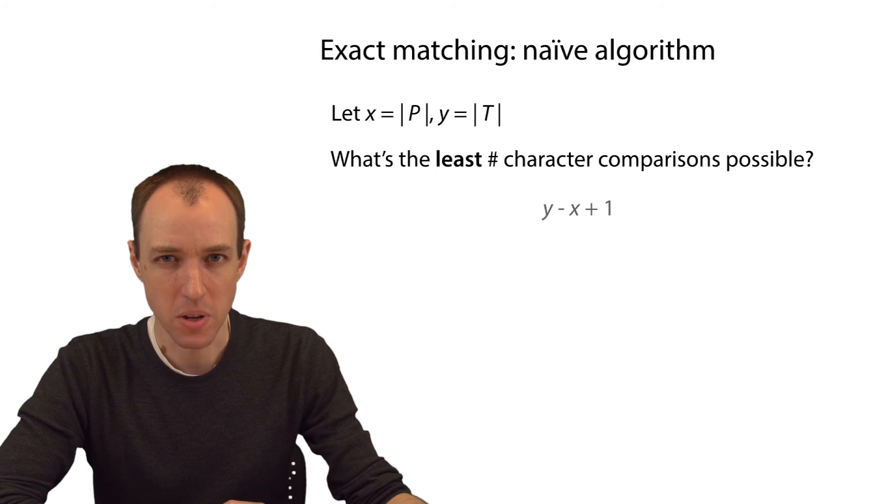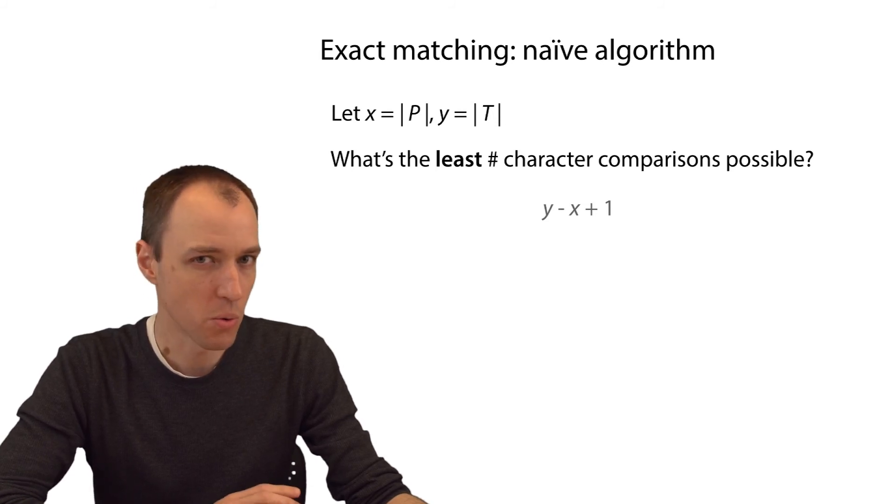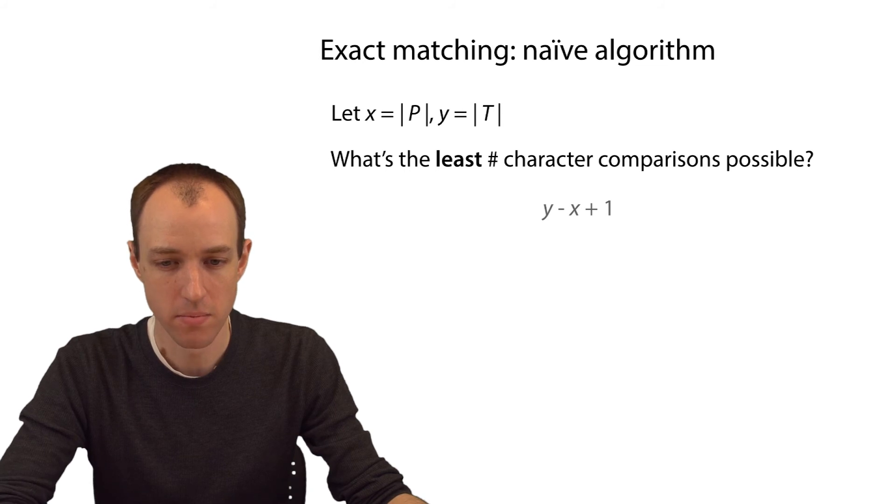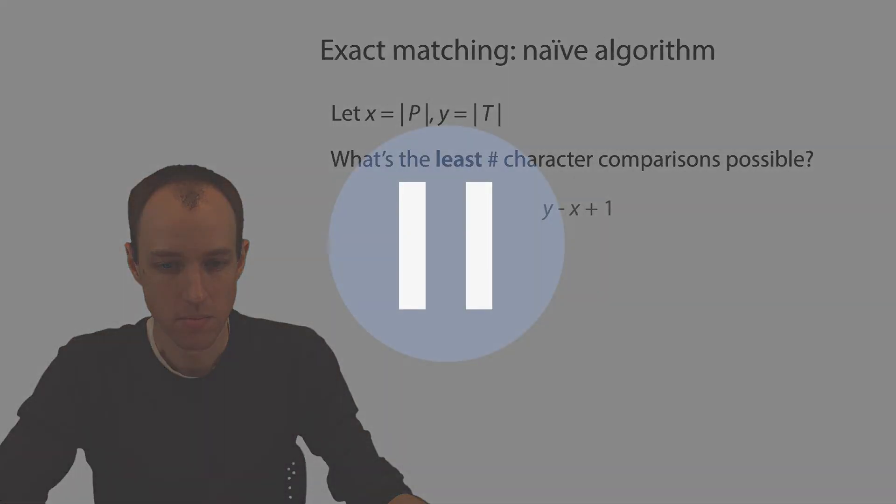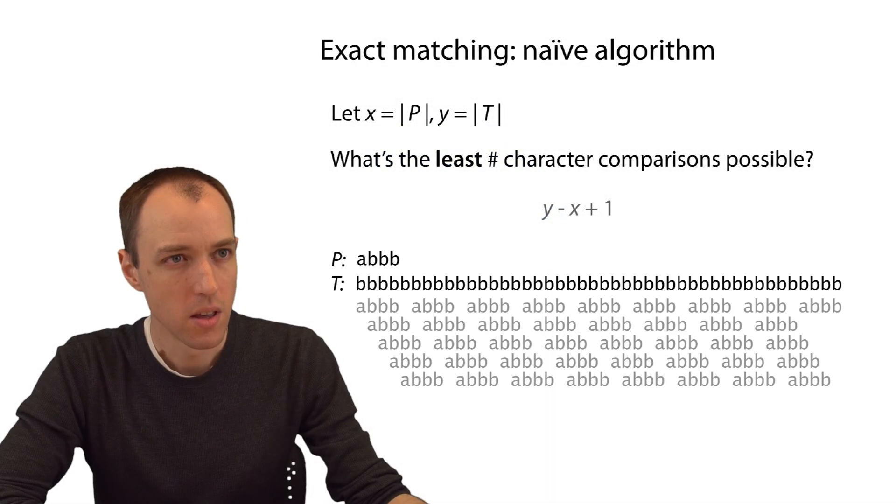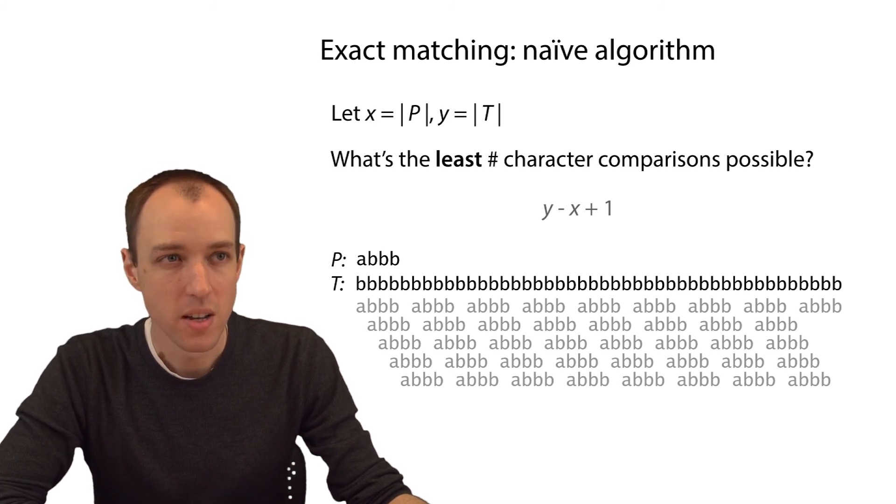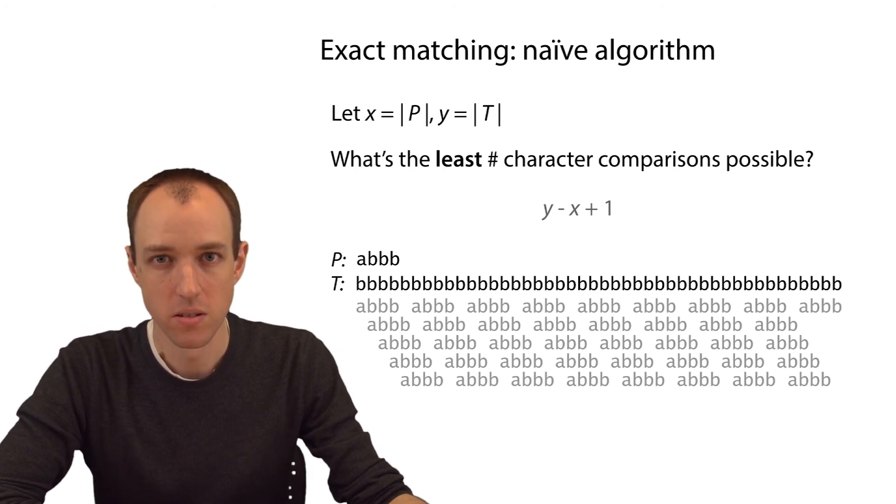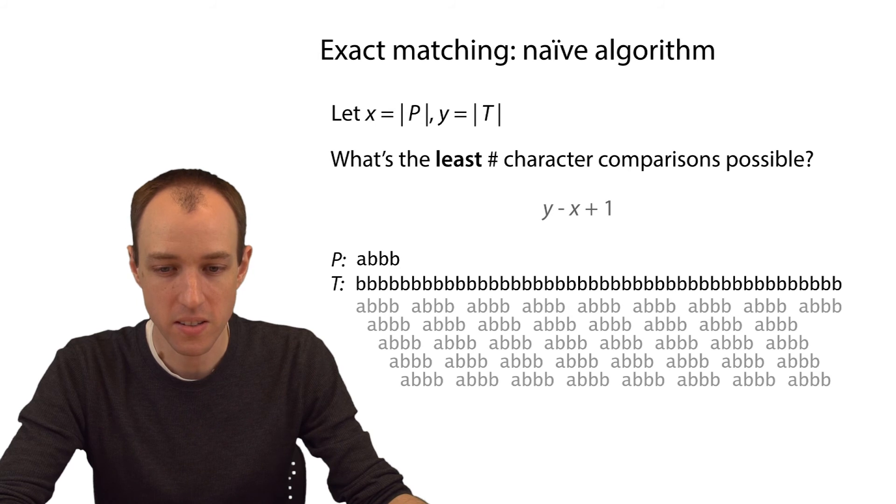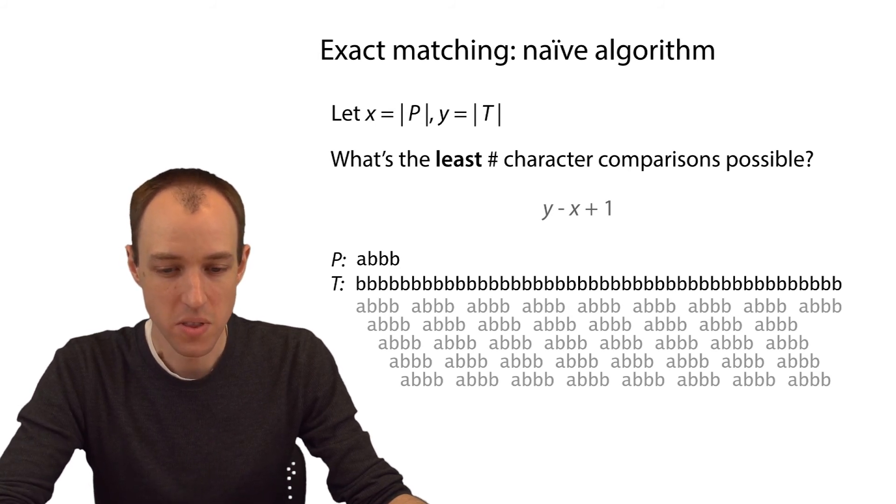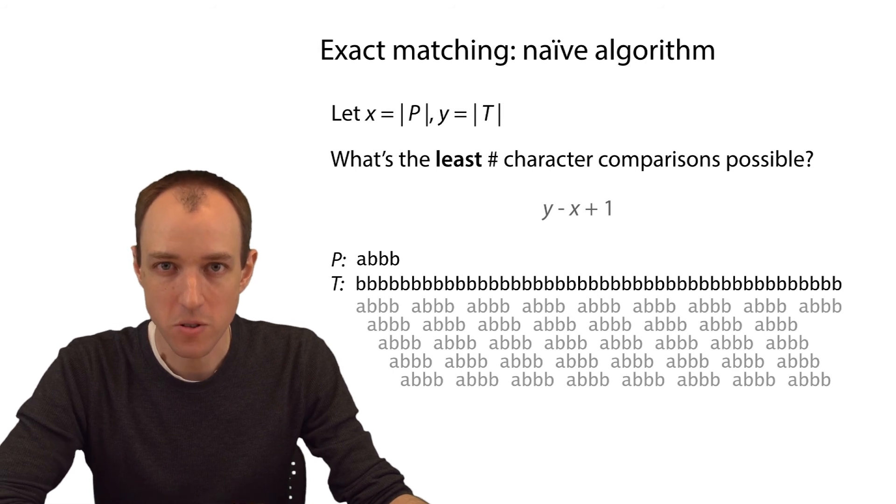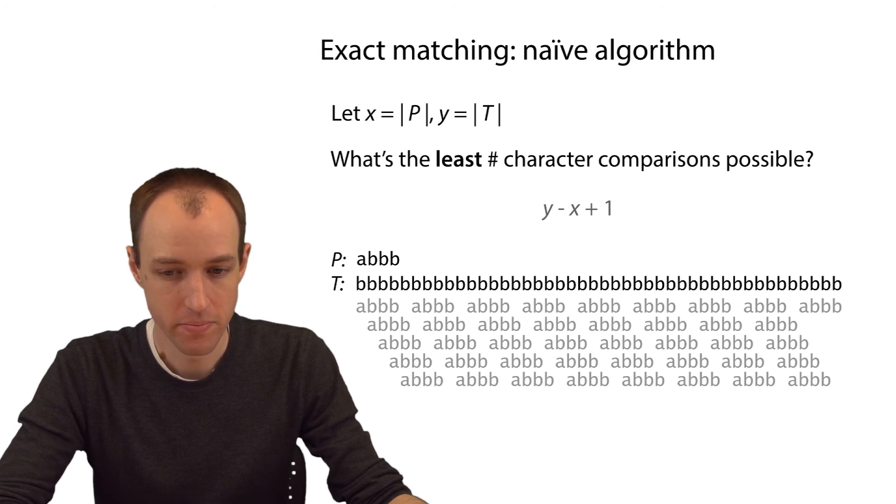So when would this happen, and what sort of scenario would this happen for? Well, this is an example of a case where that would happen. In this example, the first character of the pattern is a character that doesn't occur anywhere in the text. So the first character of the pattern is a, and yet the text consists of all b's. So in this case, every time we reach the inner loop, the very first character comparison is going to be a mismatch, and we'll break out of the inner loop.